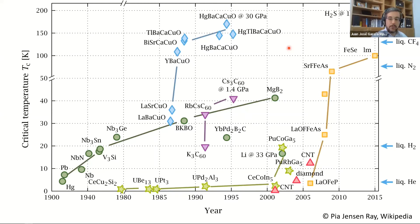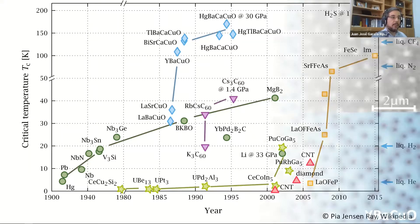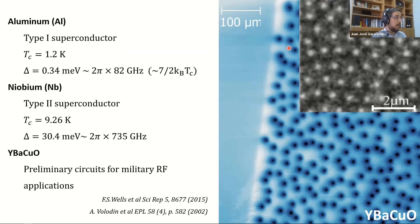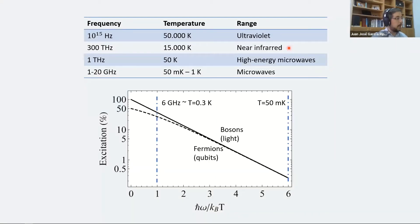Superconducting electronics mostly uses a few well-known components that are easy to manipulate and work under qualifying conditions. Aluminum can be fabricated nicely and becomes superconducting at 1 Kelvin; niobium has a higher critical temperature and also fabricates well. High-temperature superconductors are more difficult to fabricate but have some radiofrequency applications. However, we don't just want superconducting electronics — we want superconducting quantum circuits, and the key point is finding and building qubits.